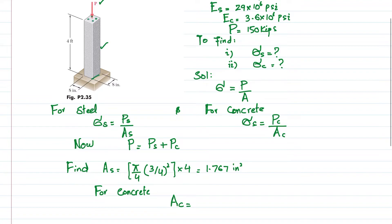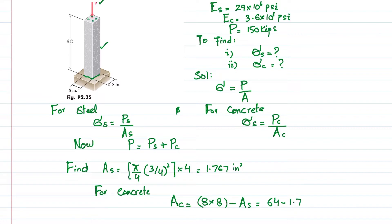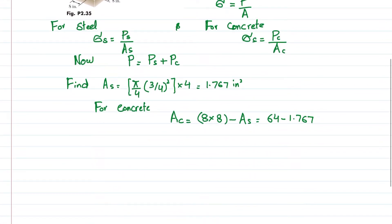For concrete: the concrete cross-section is 8 × 8, so the gross area is 8 × 8 = 64 in². Subtracting the area of the steel rods (1.767 in²), the area of concrete A_c comes out to be 62.23 in².